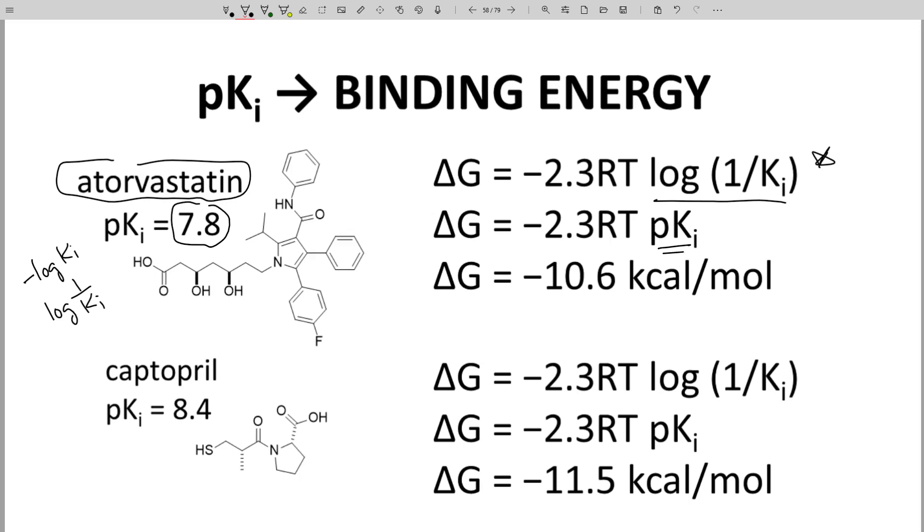We can use this number directly in our equation for binding energy. So log of 1 over KI is the same as pKI. So in place of here, we use 7.8, and if we go through the math using values of R and T, we get a binding energy of minus 10.6 kcals per mole. That's right about what we would expect. A typical drug is about 11 kcals per mole, minus 11 kcals per mole.